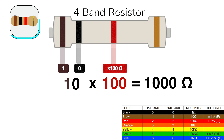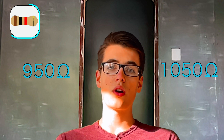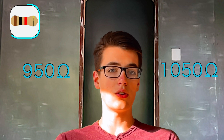Now of course these resistors aren't perfect, so the last band is the tolerance — which in this case is gold, or 5%. So this resistor could be anywhere from 950 ohms to 1050 ohms.